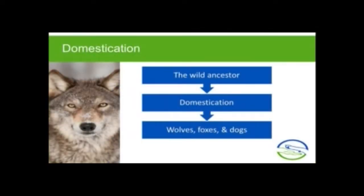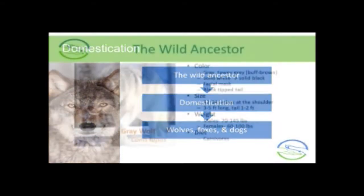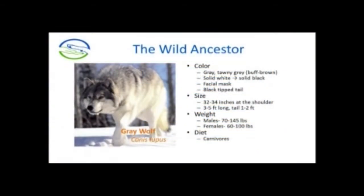We'll look at the wild ancestor of the dog and domestication. We're going to look at how domestication can influence the behavior of dogs and what changes were associated with domestication. And then we're going to compare wolves, foxes, and dogs and use them as evidence of domestication.